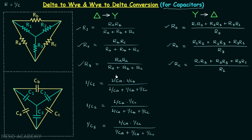The derivation of the formulas is not important; therefore you can simply remember these formulas. The only thing you have to do is to replace resistance by 1 over capacitance. The same thing we will do in the case when we have a Y network of capacitors and we need the delta network of capacitors.